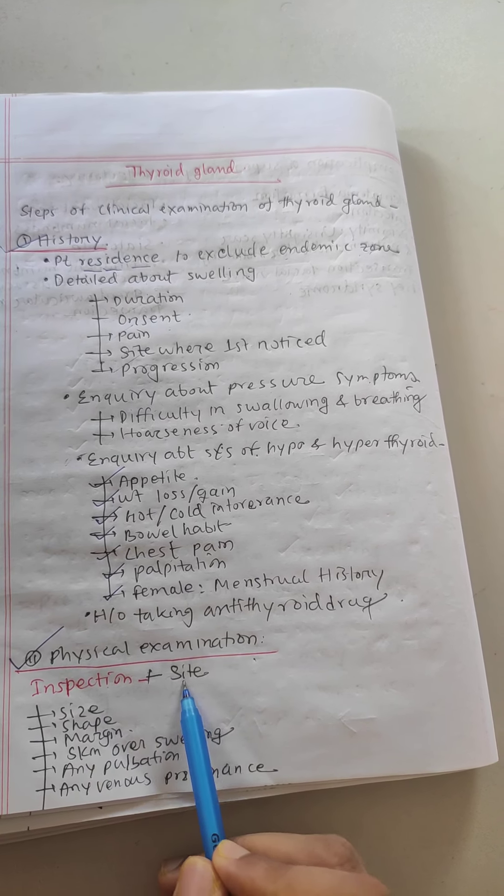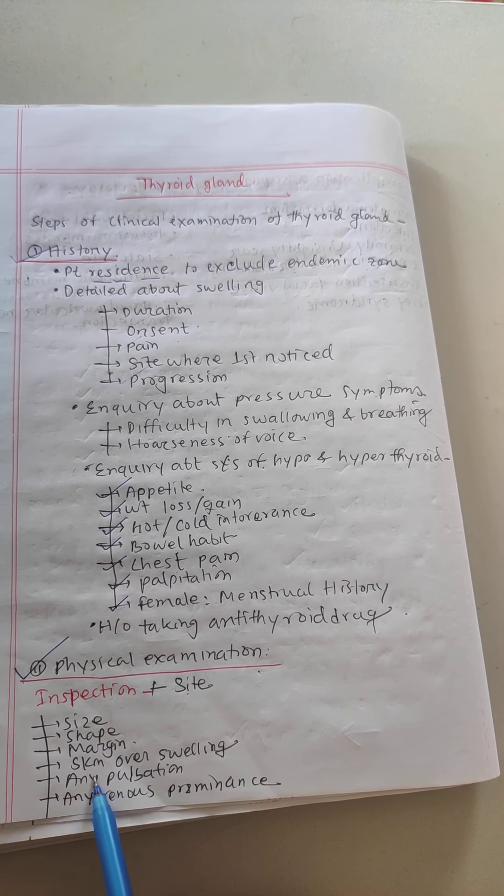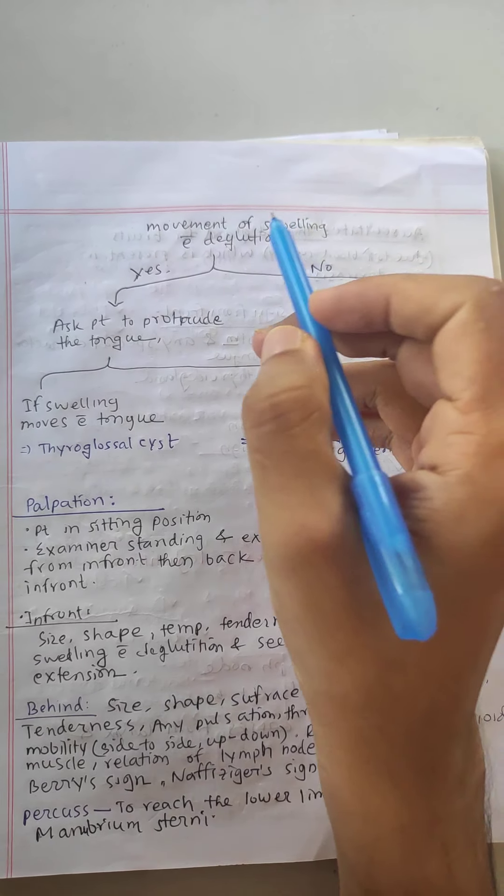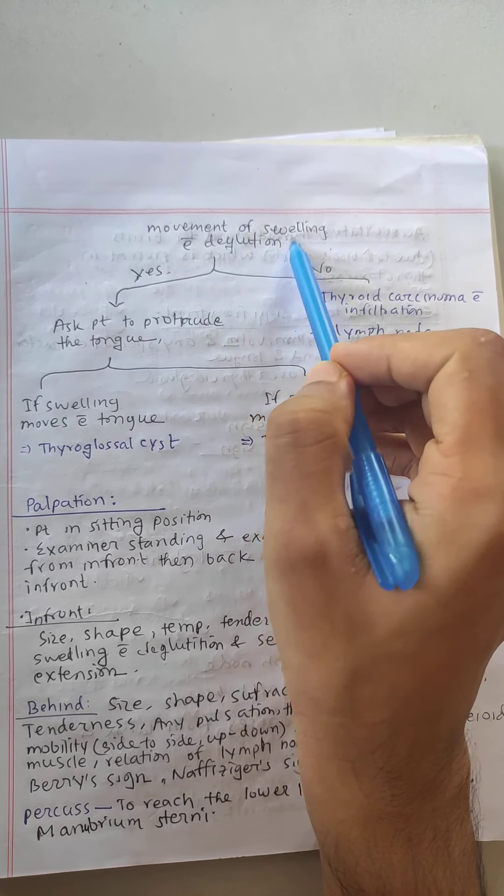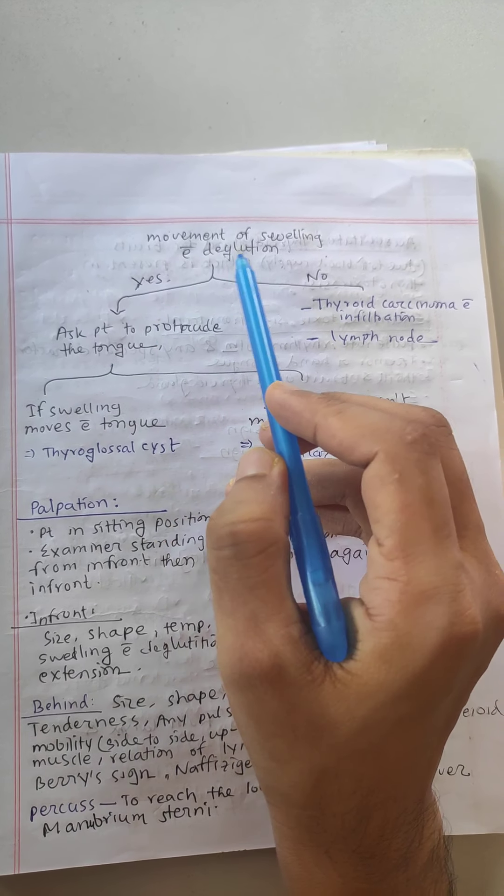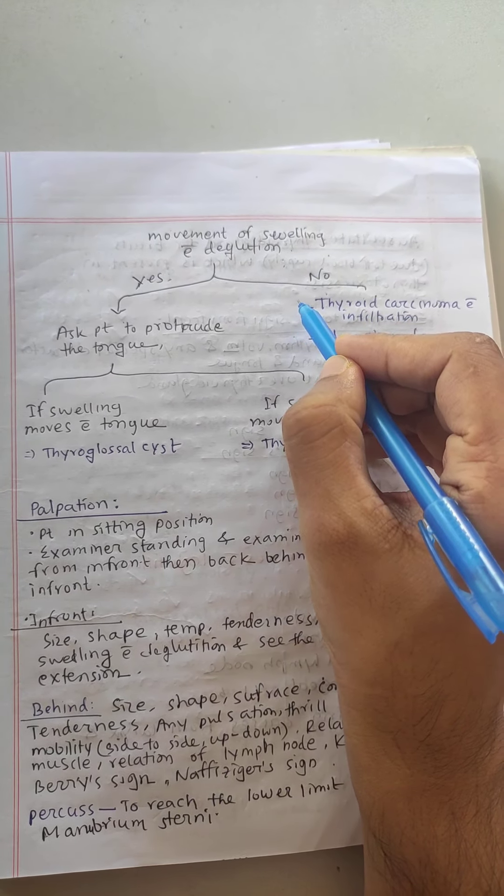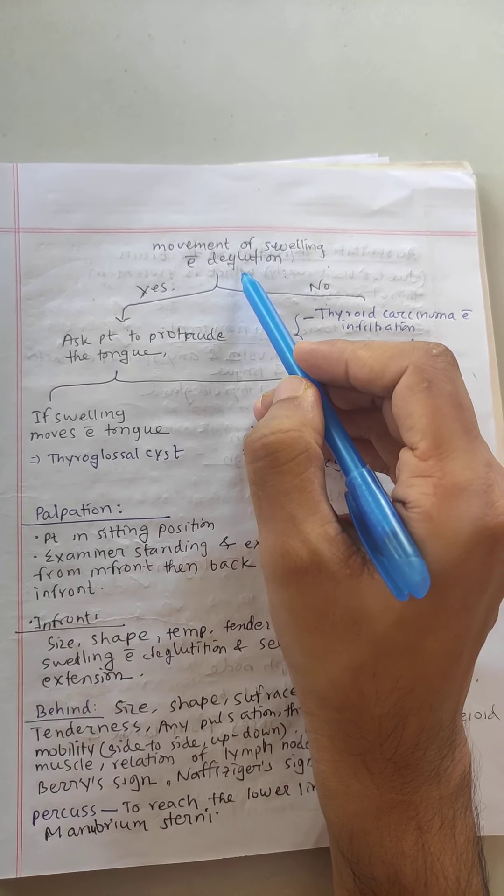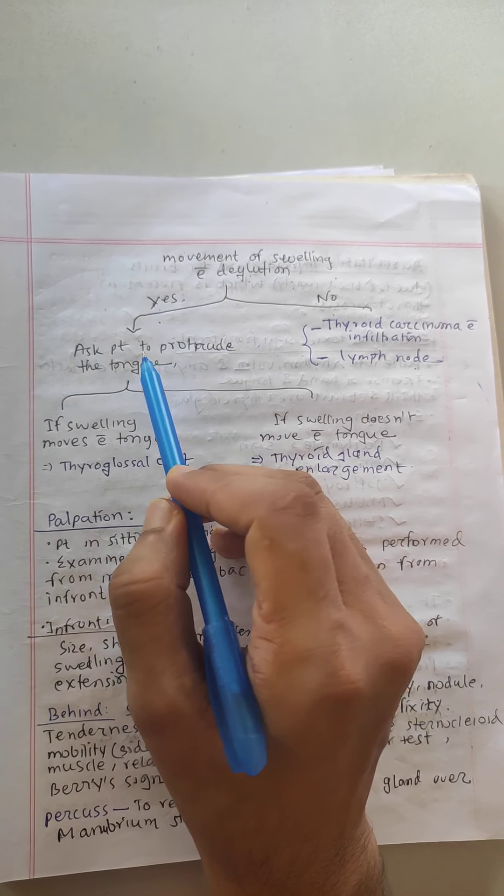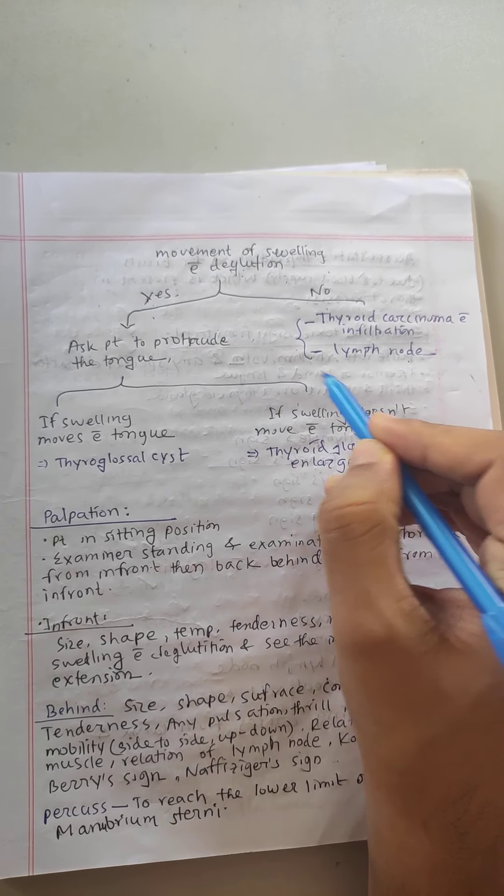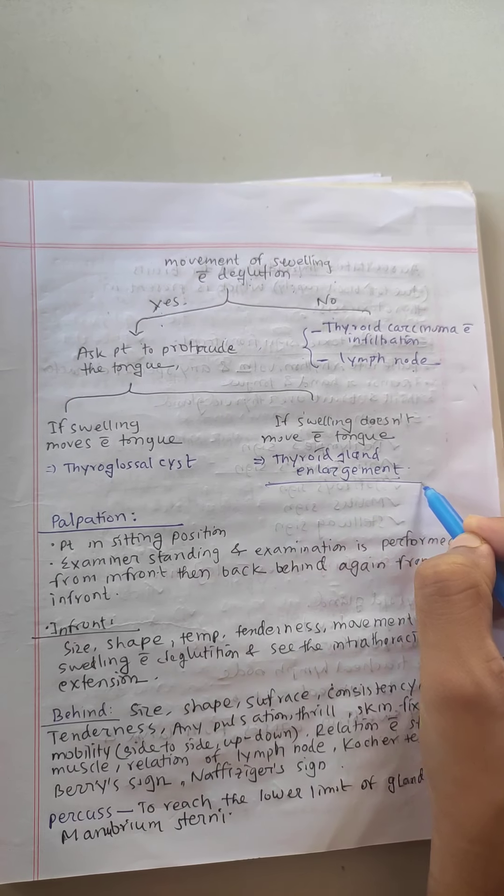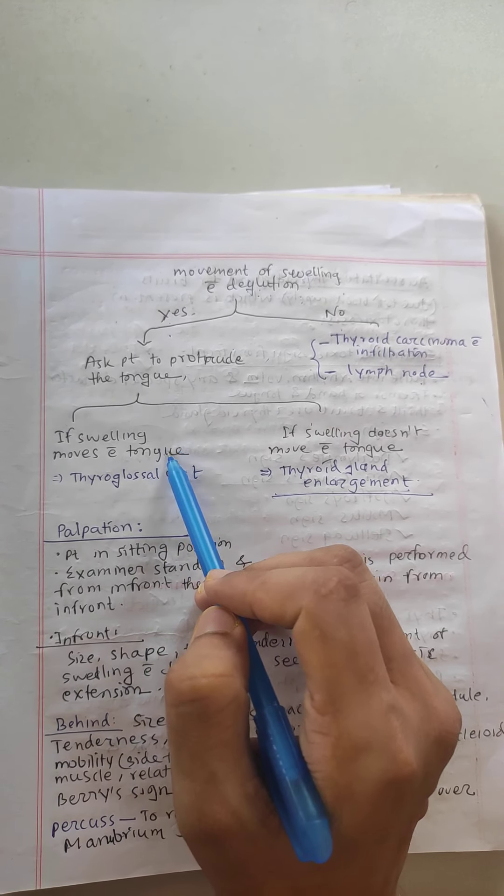Next, physical examination. First time is inspection - we see site, size, shape, margin, skin over the swelling, then any pulsations or venous prominence. Then the movement of the swelling with deglutition. The swelling moves with deglutition but in thyroid carcinoma with infiltration or lymph node involvement, it may not move correctly. Ask the patient to protrude the tongue - if swelling doesn't move with tongue protrusion, then thyroid gland enlargement. If the swelling moves with tongue protrusion, then it will be thyroglossal cyst.